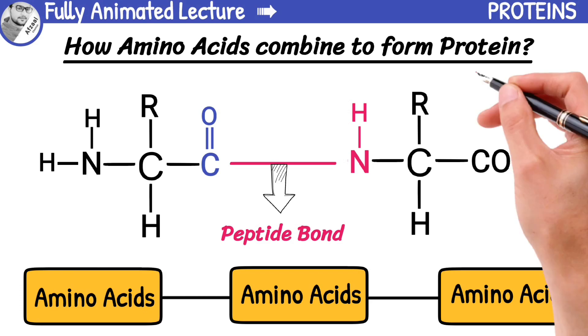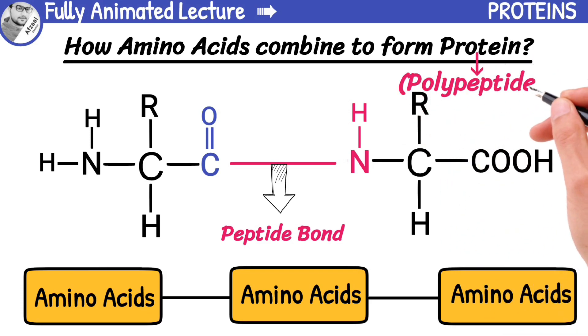Proteins are also known as polypeptides. Well, it's because proteins are made up of many polypeptide chains. These chains fold and twist into complex, three-dimensional structures, giving each protein its unique shape and function.